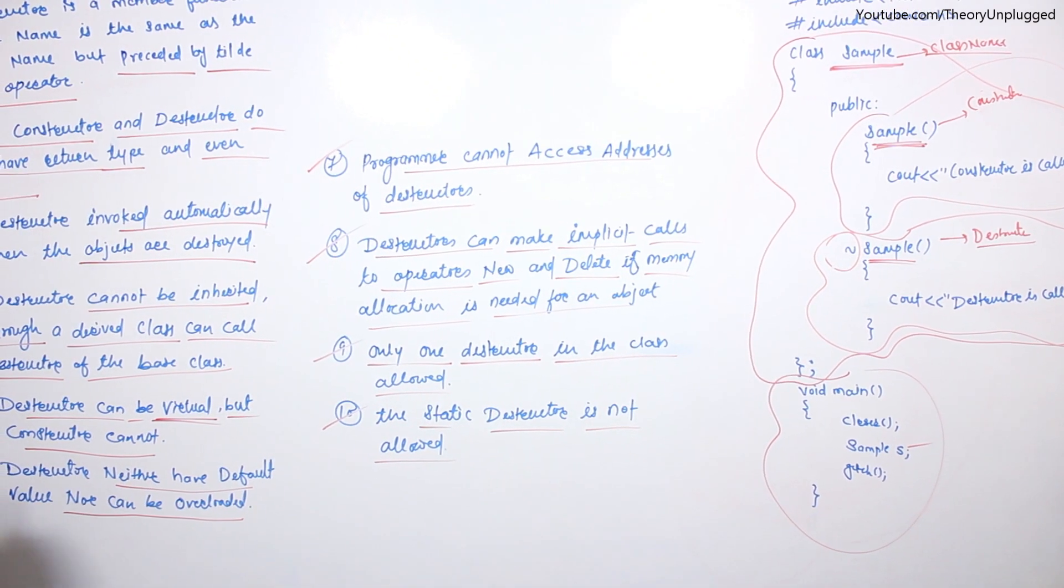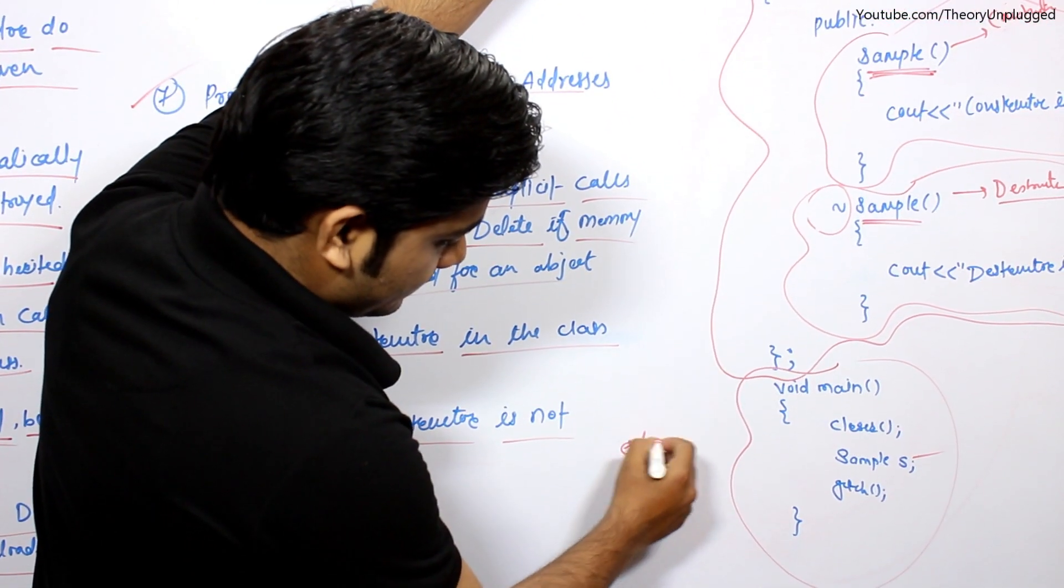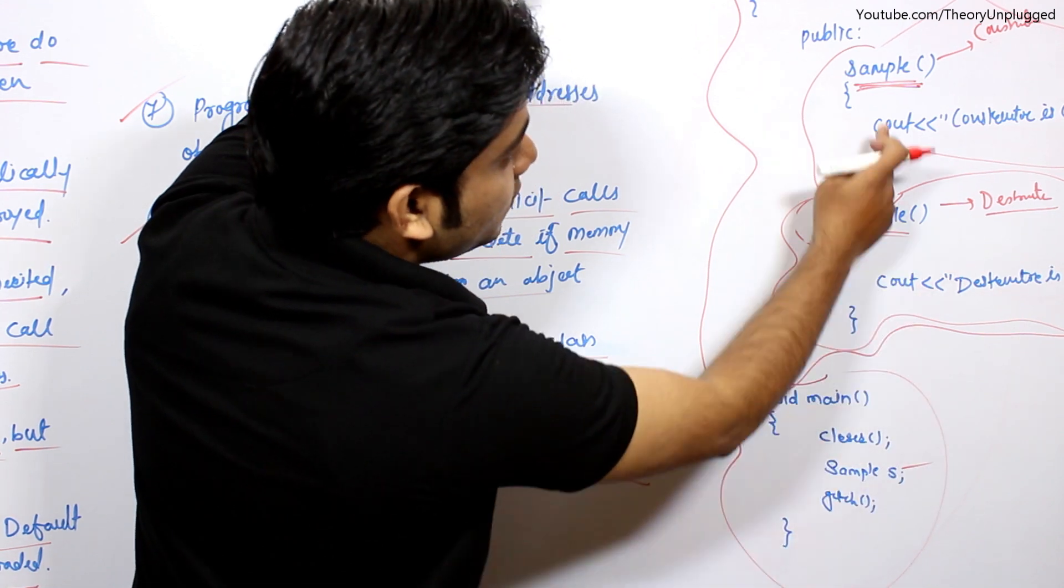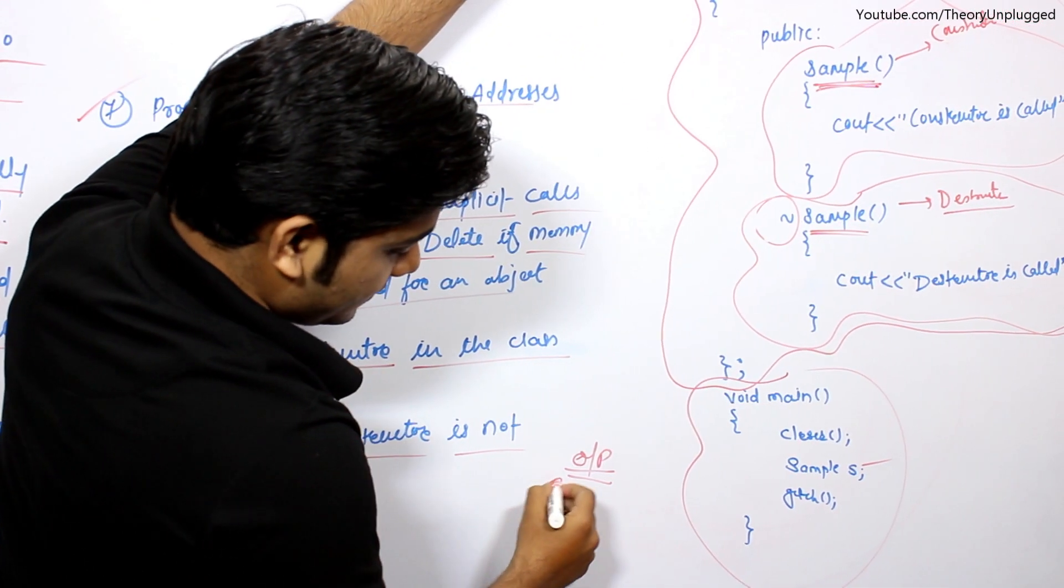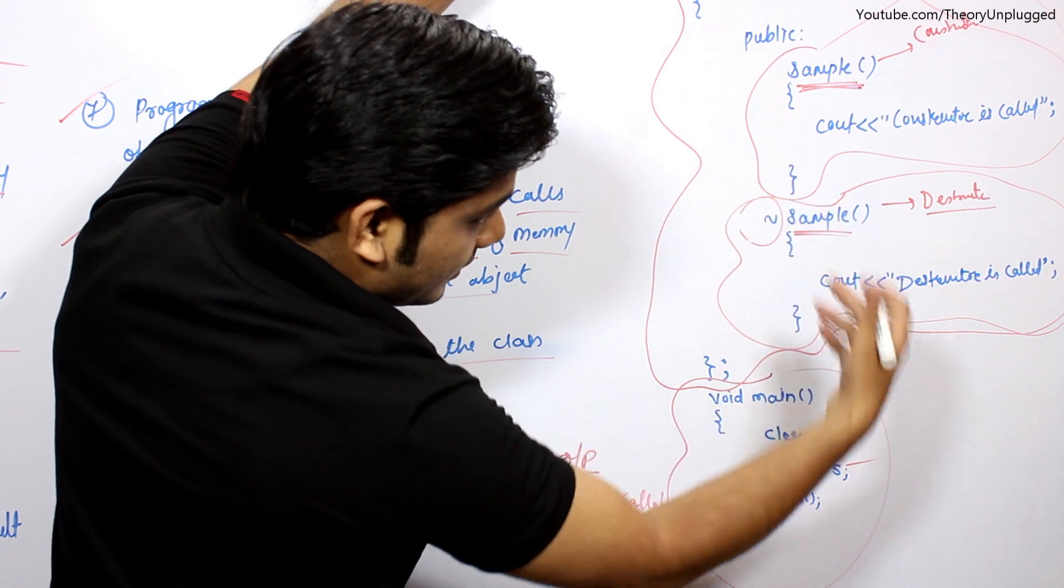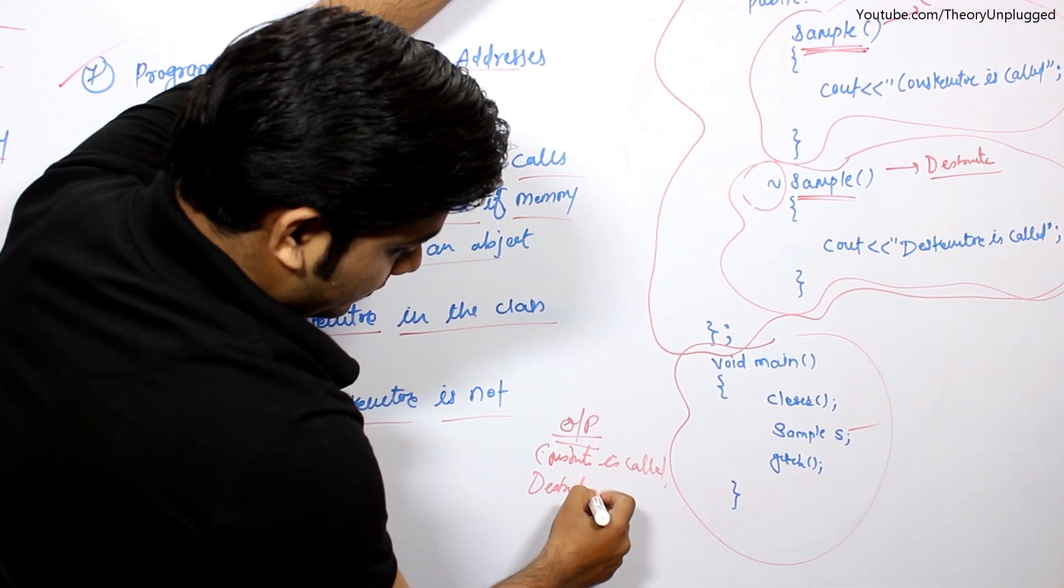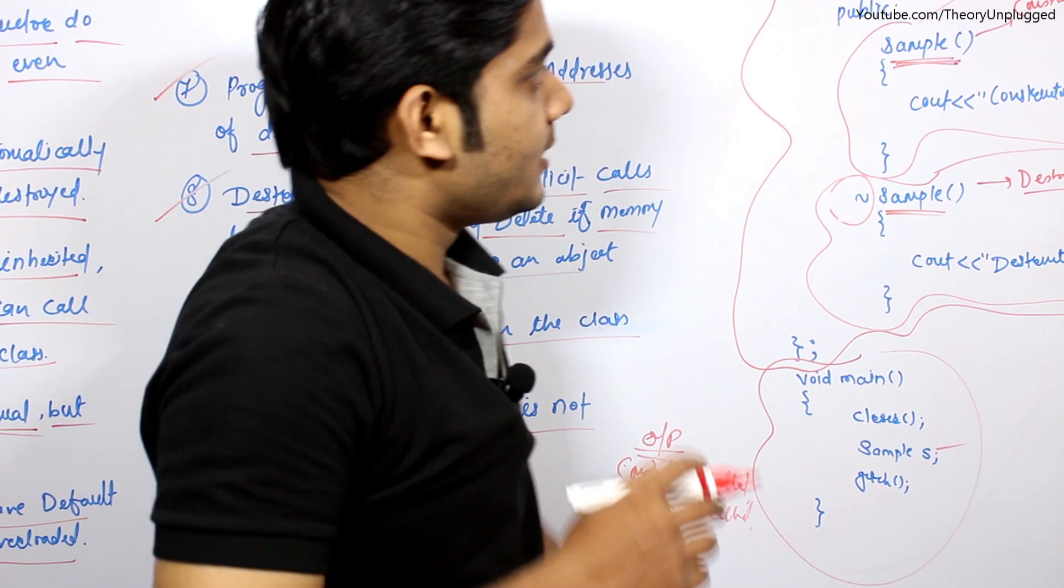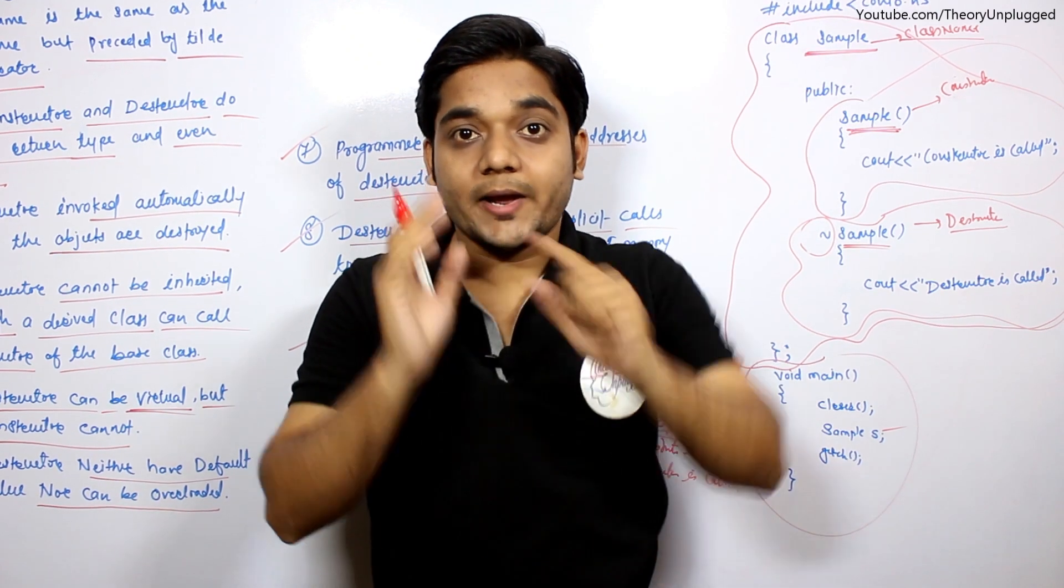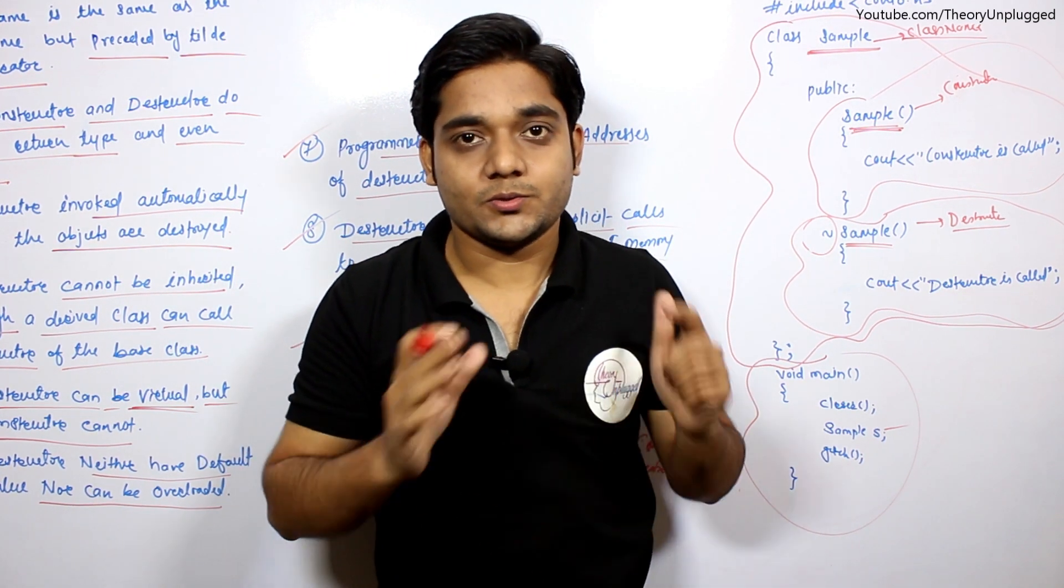So, these are the 10 points with the example. If we talk about the output, a very simple output will come. When the class object is created, constructor will run. What will be the output? Constructor is called. And when the object is destroyed, at that time destructor will run. Destructor is called. So, here are the basic characteristics of destructor, in which 10 points give you a basic idea of what are the characteristics of destructor.